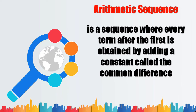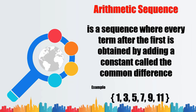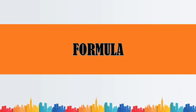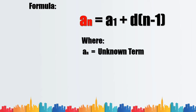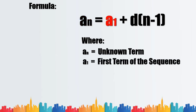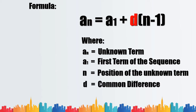Number two: an arithmetic sequence is a sequence where every term after the first is obtained by adding a constant called the common difference. The formula we will be using is: a sub n equals a sub one plus d multiplied by the quantity (n minus one), where a sub n is the unknown term, a sub one is the first term, n is the position of the unknown term, and d is the common difference.